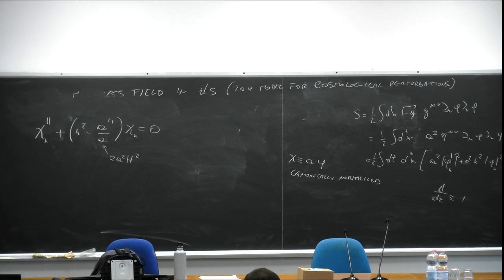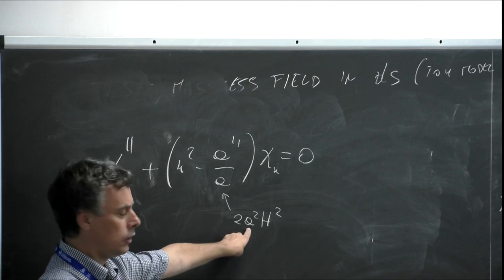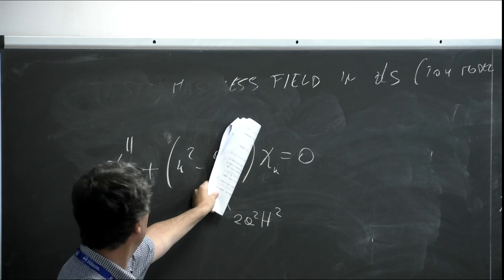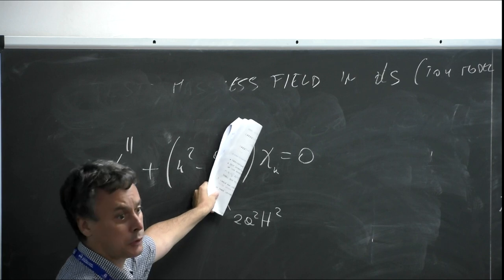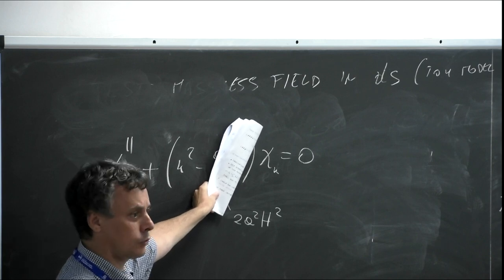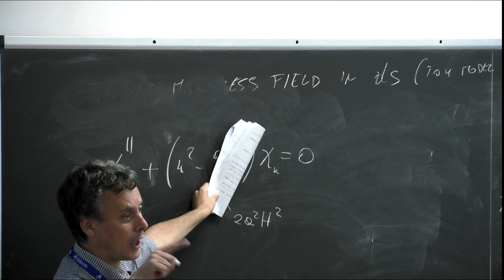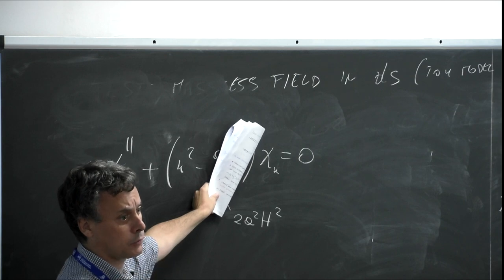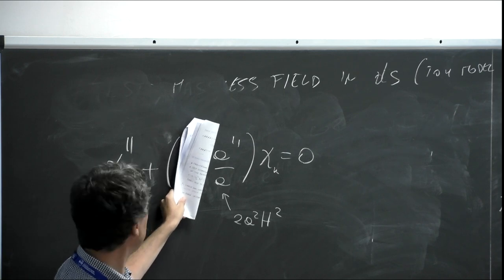There are two regimes. Inside the horizon means the scale factor is initially very small, so this term is initially subdominant, and we get the same equation as a simple harmonic oscillator in Minkowski. This justifies what I was telling you yesterday. We take the solution which is the normalized one in Minkowski: e^{-ikτ} divided by √(2k). When you go outside the horizon, you get a different term — a minus sign — which means you are going to amplify the mode due to the expansion of the universe.